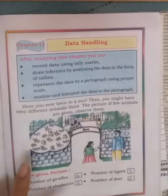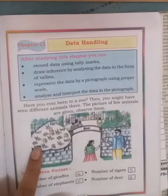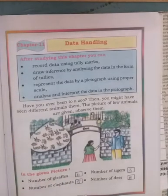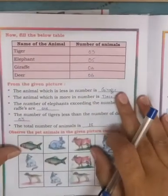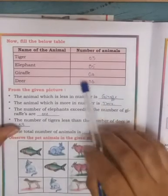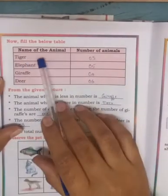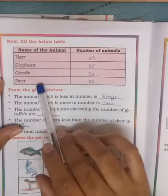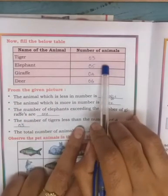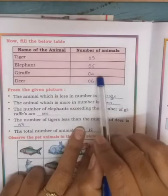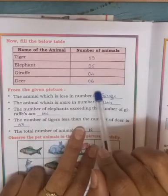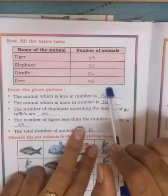Dear students, in the first picture, we collect the information about the number of giraffes, elephants, tigers, and deer. Then we write the information in a table with the name of the animals — tiger, elephant, giraffe, and deer — and their numbers: tigers 3, elephants 5, giraffes 4, and deer 6.